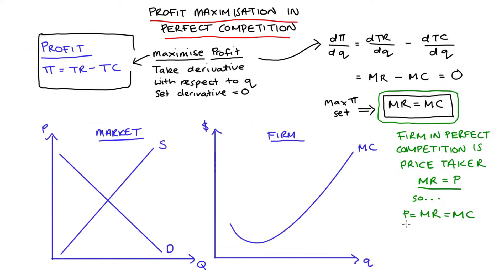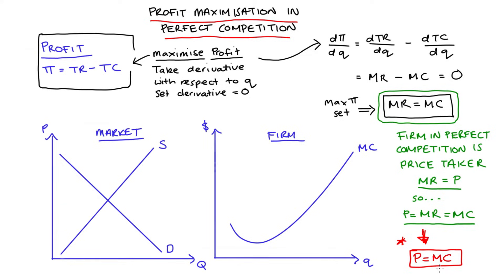From this set of equalities, if we set aside the marginal revenue term in the middle, we see that the profit maximizing condition for the perfectly competitive firm requires setting quantity such that price equals marginal cost. I like thinking about it this way because it shows clearly that in perfect competition, the price the consumer pays equals the cost of production — which is actually one of the characteristics of perfect competition: there is no markup over price.